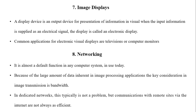Image displays: a display device is an output device for the presentation of information in visual form. When the input information is supplied as an electrical signal, the display is called an electronic display. Common applications for electronic visual displays are televisions and computer monitors, which display the uncompressed format of the image.